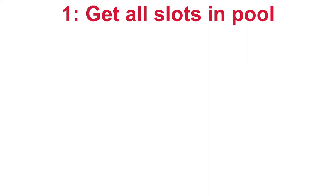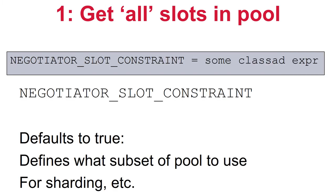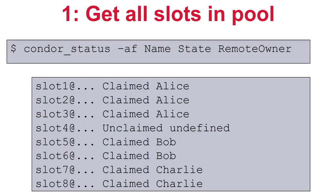The first step is to get all slots in the pool, claimed or unclaimed — the shell equivalent is simply running condor_status. By default the negotiator gets all slots, but there is a knob, negotiator_slot_constraint, which is a ClassAd expression evaluated against each ad in the pool. When this expression evaluates to true, that ad is considered part of the pool the negotiator should use. Advanced administrators can use this to split or shard the pool and have multiple negotiators operate on distinct subsets.